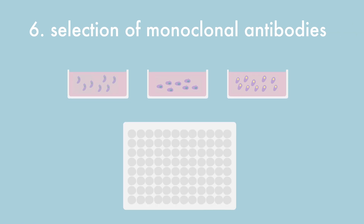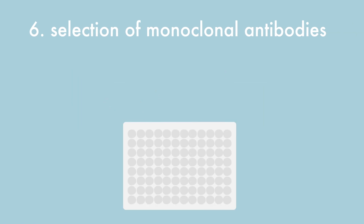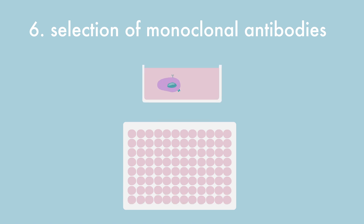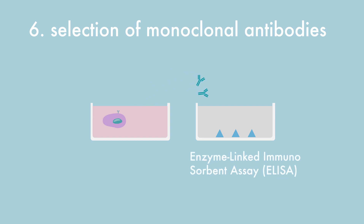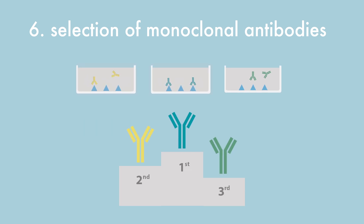The next step is to isolate hybridoma cells from individual clones and grow them in separate wells of a 96-well plate. The hybridomas secrete antibodies into the culture medium. Using a suitable test such as ELISA, the obtained culture media can be screened for antibody binding to the target protein. The antibody with the best binding capacity to the target protein will be upscaled for production.